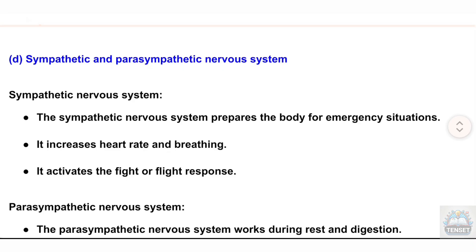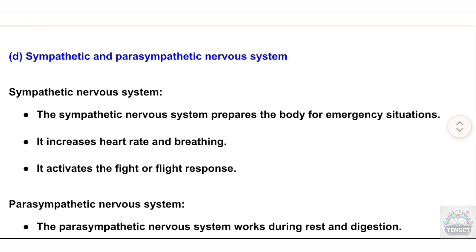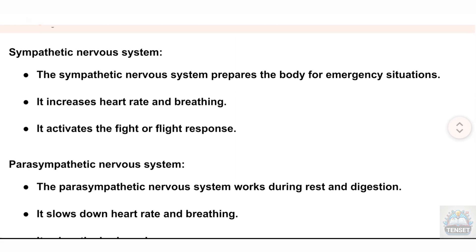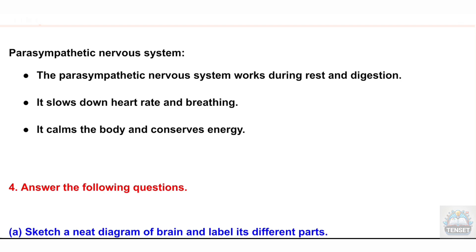(d) Sympathetic and parasympathetic nervous system. The sympathetic nervous system prepares the body for emergency situations; it increases heart rate and breathing and activates the fight-or-flight response. The parasympathetic nervous system works during rest and digestion; it slows down heart rate and breathing, calms the body, and conserves energy.